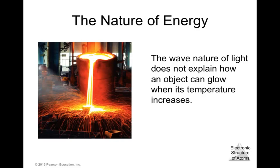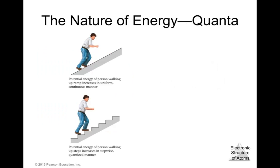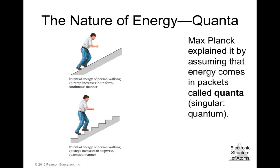The wave nature of light does not explain how an object can glow when its temperature increases. This is due to energy. The wave by itself doesn't explain why it glows. Max Planck defined that energy comes in packets called quanta — a quantum is a specific package of energy. To go from one energy step to the next you need a specific amount of energy, like steps on a staircase.